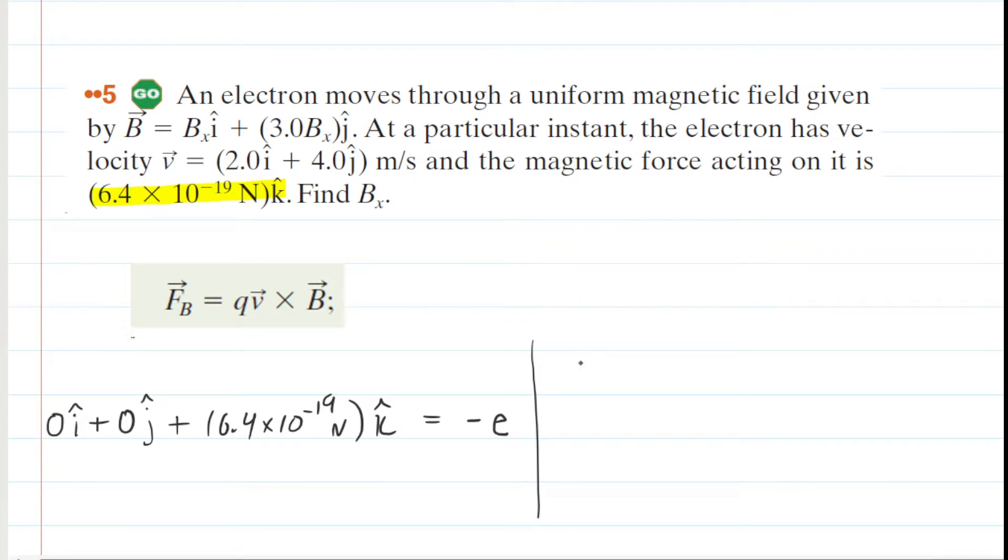So we're going to set up our cross product using this standard notation. In the cross product, we're going to line up our i-hat, j-hat, k-hat components here, and then we're crossing first velocity. So that means you're going to put all the components of velocity across that row in yellow. Now the velocity vector is given right here. We can see that the i-hat component is 2, and the j-hat is 4, but then there is no k-hat component. So that would just be a 0.